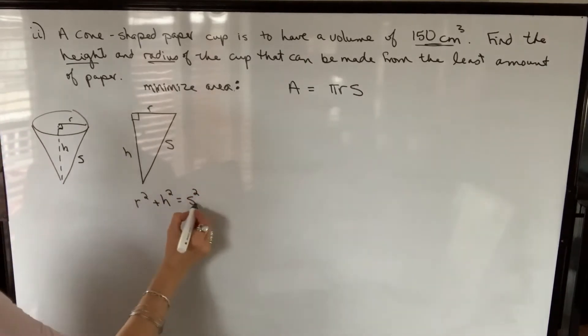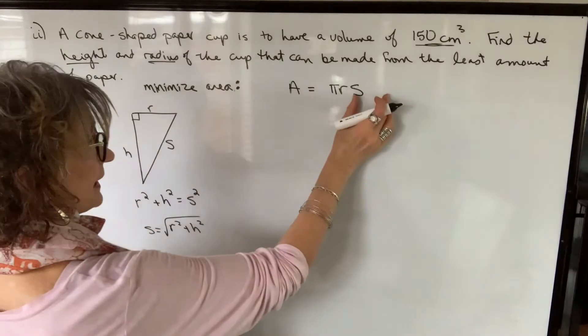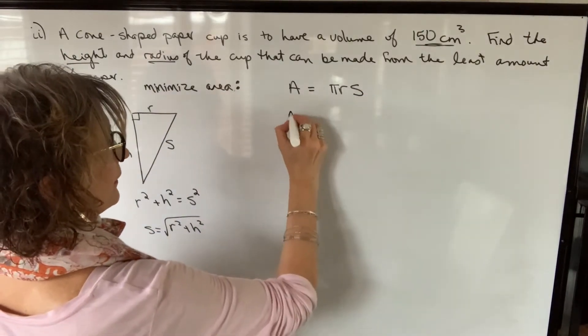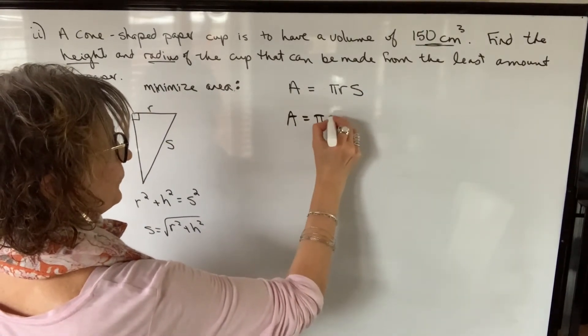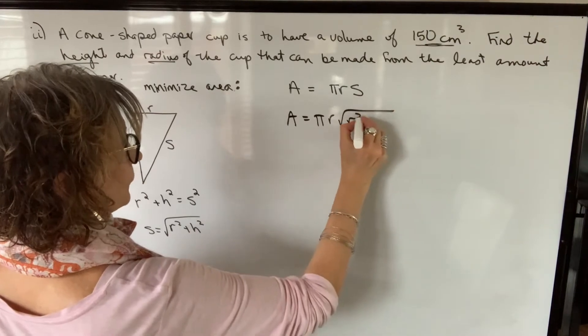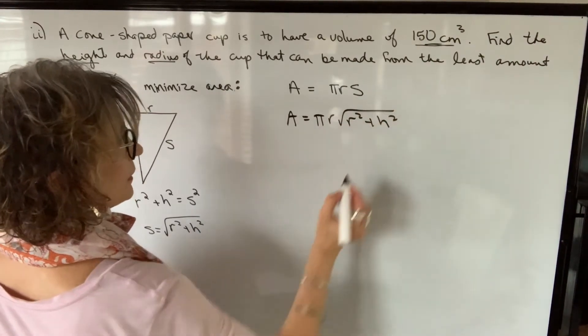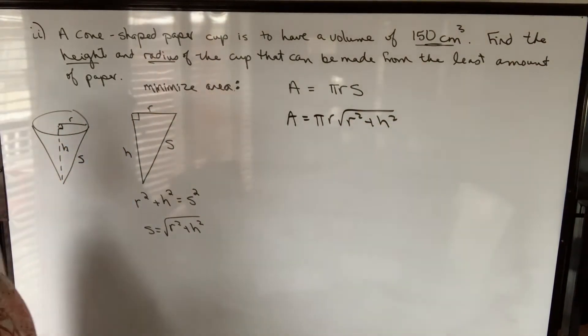Therefore, I can eliminate s and write s in terms of r. But it's also in terms of h. So I can't replace that, or I can, but then I still have two variables.